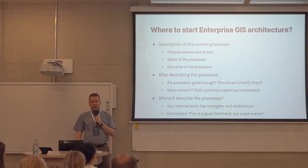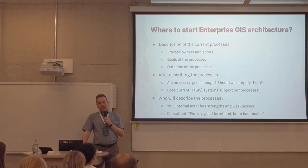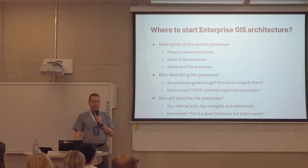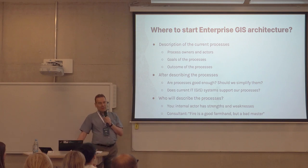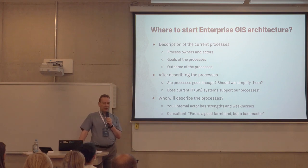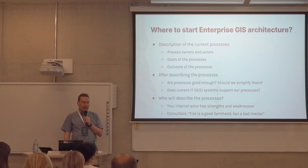Where to start with enterprise GIS? I usually say that you have to describe your current processes. Organizations are running processes — do they know it or not? Maybe they have a description of the processes, but that doesn't mean they follow those processes. The main thing, in my opinion, is to find the owners of the processes and the actors in the processes, so that you know who is responsible. After driving through the processes, you think about whether they're good enough and how the current GIS system will fulfill the needs.